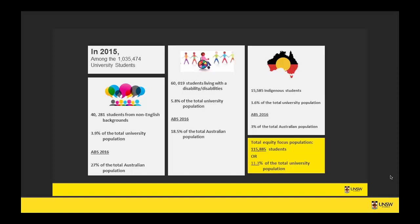Within our equity focus group, at last count in 2015, this includes approximately 115,000 students, which make up about 22.75% of the total university population. So this is a significant proportion of students we're looking at and the insecurities and issues that they face.